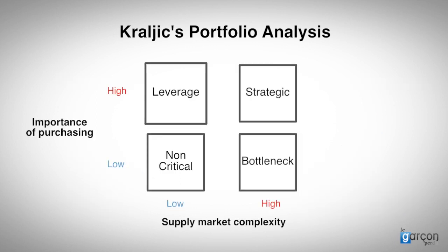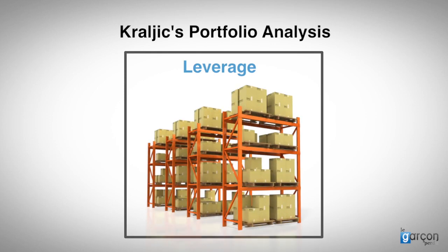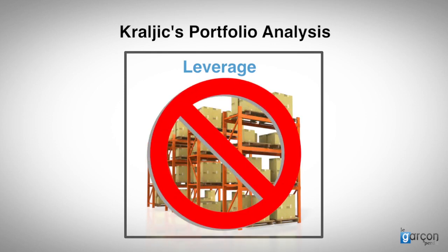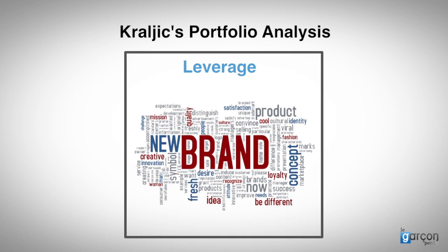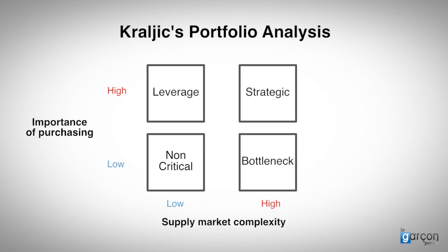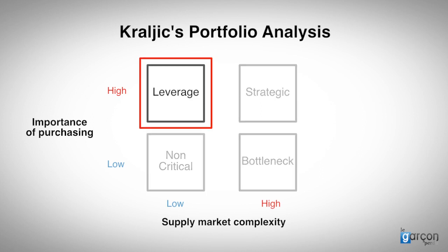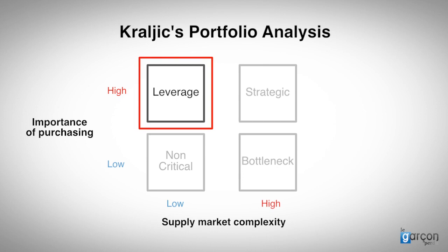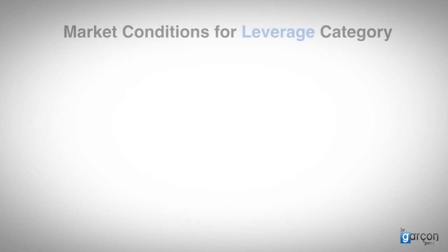Now let's look at the leverage quadrant. The truth is that most suppliers do not want to be commoditized, and consequently, suppliers develop strategies to avoid being in this quadrant. The result is that there are fewer categories in this quadrant than you might expect. But conversely, many procurement strategies seem to treat all categories as if they were leverage.